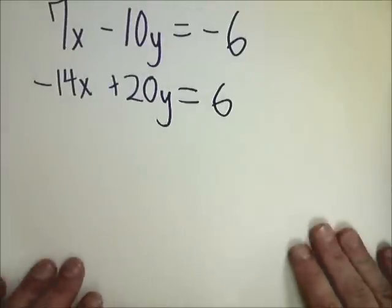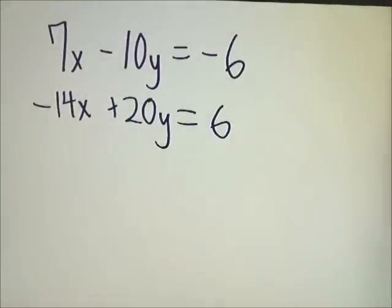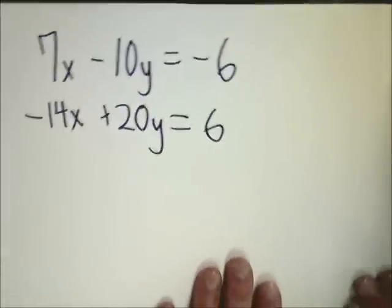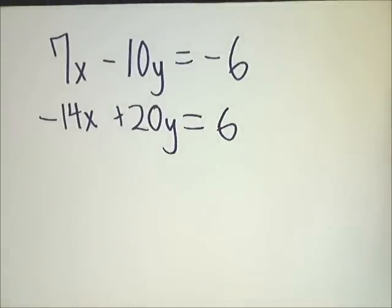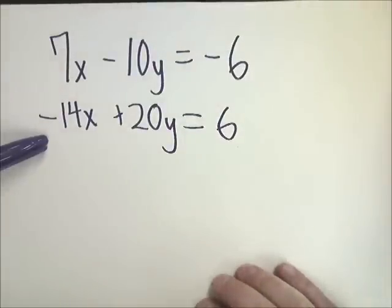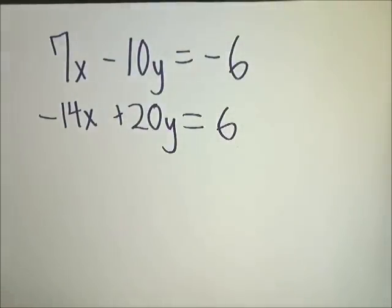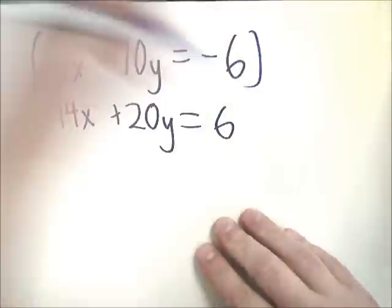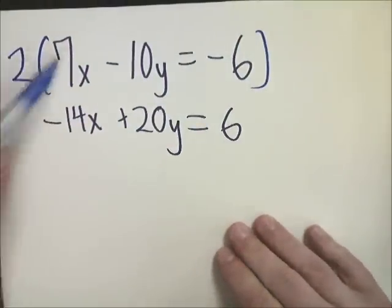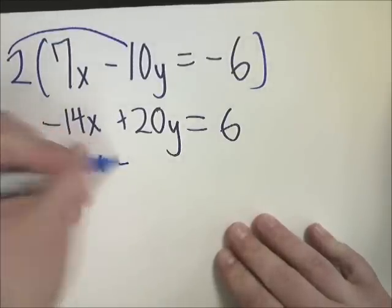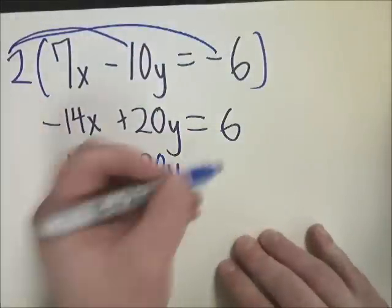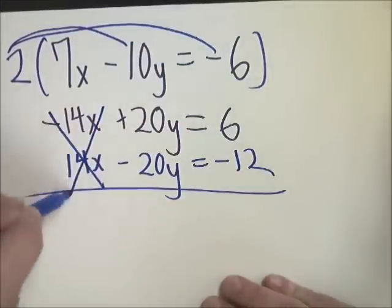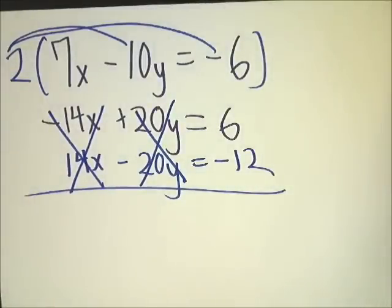Now there's one other one I'd like to talk about. Let's talk about one more special type. There's a couple special cases that you might have when you do systems of equations, and of course, there are no solution and infinitely many solutions. Sometimes that happens when you have elimination. In this case, I know that 7 times 2 gives me 14, so I'm just going to do 7 times 2 and everything else by 2 as well. So I do 7 times 2 gives me 14x. 7 times negative 10 gives you minus 20y. And then 2 times negative 6 gives you negative 12. In this case, these cancel and these cancel.